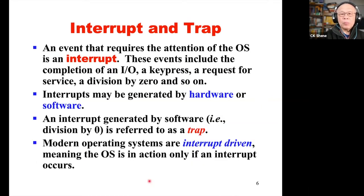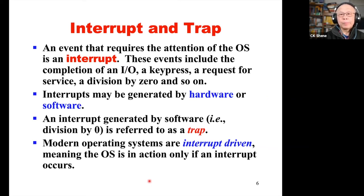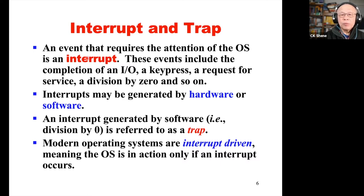The next important concept is interrupts and traps. We will use this word very, very frequently. Our definition is an intuitive one rather than a very formal one — you will learn the formal one in a computer organization or computer architecture course. An event that requires the attention of the operating system is referred to as an interrupt. These events include the completion of an input-output, a key press, a request for service, division by zero, and so on.